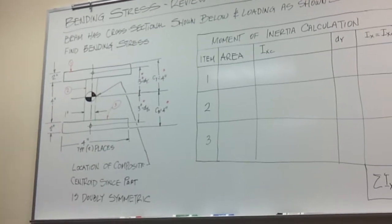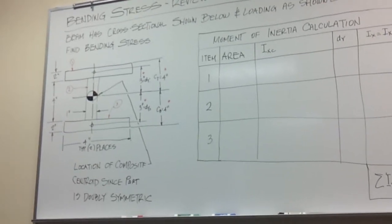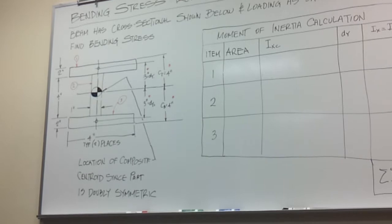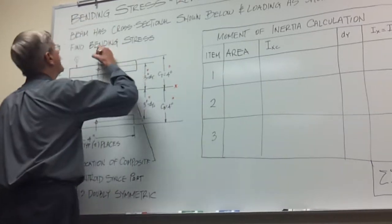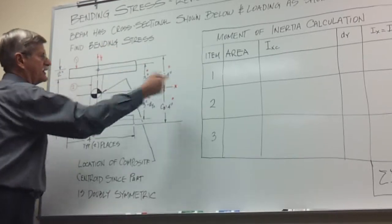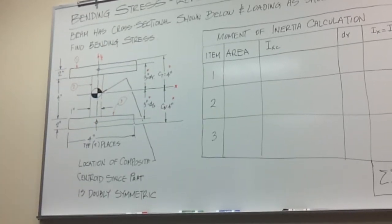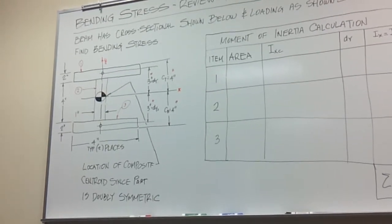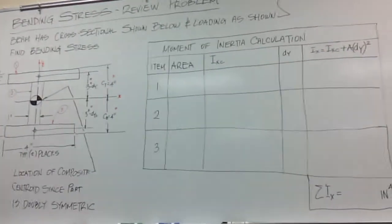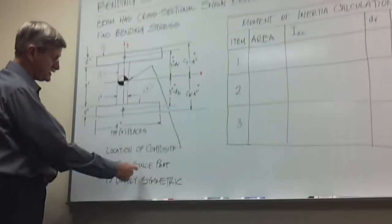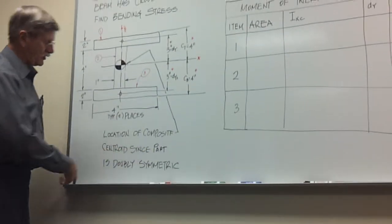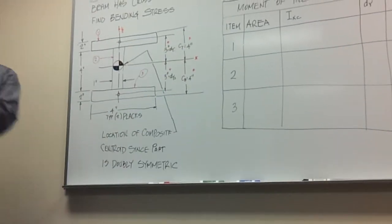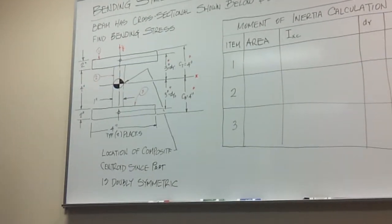When you look at this piece, one thing that's nice about it is that the part is doubly symmetric. It is symmetric about the x-axis and about the y-axis. Here's my y, here's my x. So if a part is doubly symmetric, is it easy to figure out where the centroid is? It's right at the geometric center. You go half of x, half of y, and you got it.